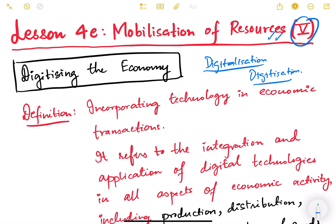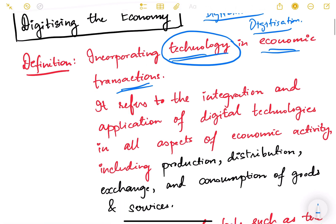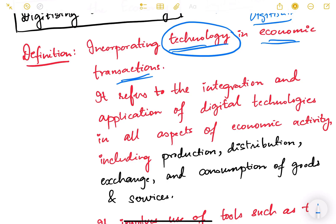What is the meaning of digitizing the economy or digitalizing the economy? In very simple terms, digitizing the economy means incorporating technology in economic transactions. We use modern technologies like computers, software, internet, AI, blockchain — different kinds of technology which make economic transactions digital or device-based. That process is called digitizing the economy; we are incorporating technology into our day-to-day transactions.